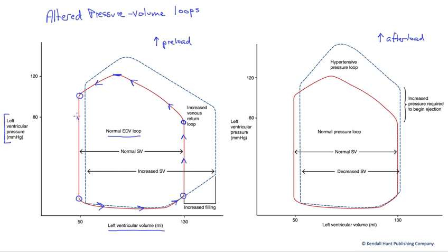We again become isovolumic. In this case, pressure is falling as the cardiomyocytes relax and the pressure will fall and fall until the atrial pressure is once again higher and our AV valve opens down here. We begin the next cycle.